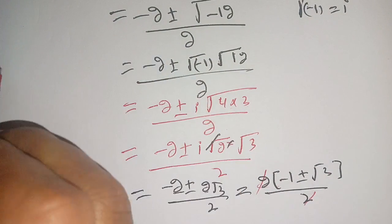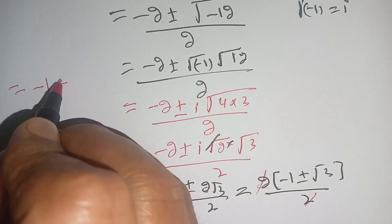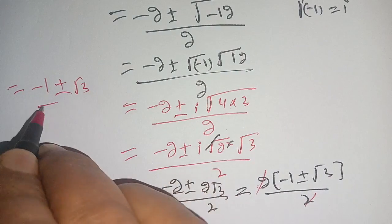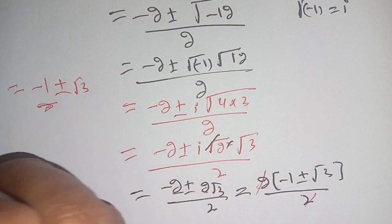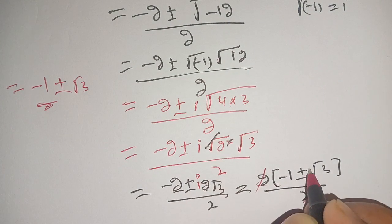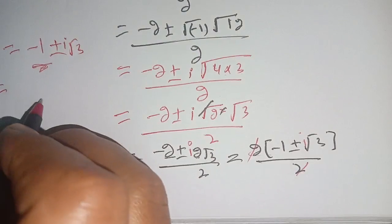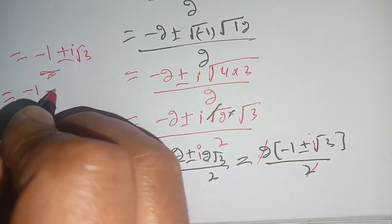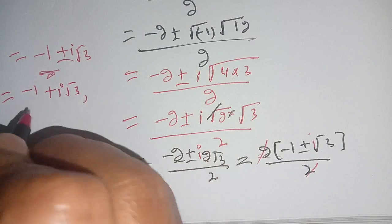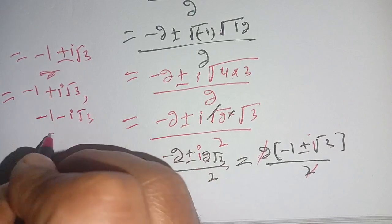The 2s cancel out, leaving us with minus 1 plus or minus iota root 3. So the two complex roots are x equals minus 1 plus iota root 3, and x equals minus 1 minus iota root 3.